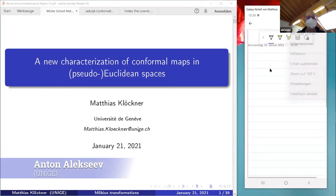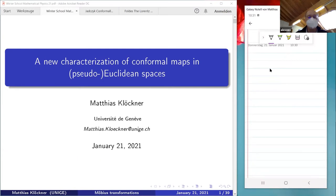So, our next speaker is Matthias Klockner, and the title is A New Characterization of Conforming Maps in Pseudo-Euclidean Spaces. Matthias, please. Thanks. So maybe one confession first: this has nothing to do with probability theory, but a lot with mathematical physics.